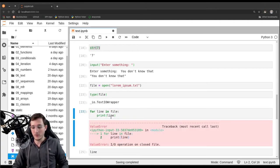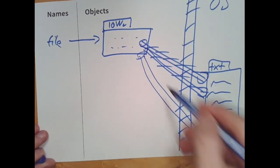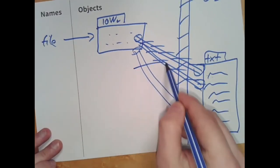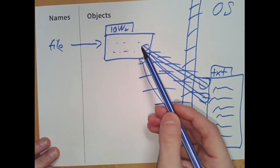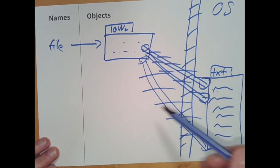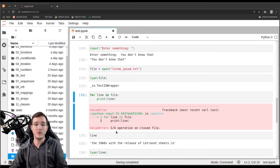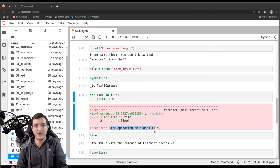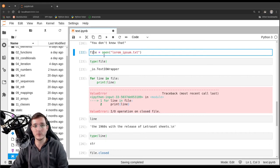Now if we try to loop over the file object one more time, we get a ValueError. What calling the close function did is: the cursor that points to the outside world is now removed. The proxy object is still in our computer's memory but the cursor going to the outside world is removed. So if we try to do anything with this object now we will get an error — 'I/O operation on a closed file' — the file is closed and we can't do anything with it anymore.